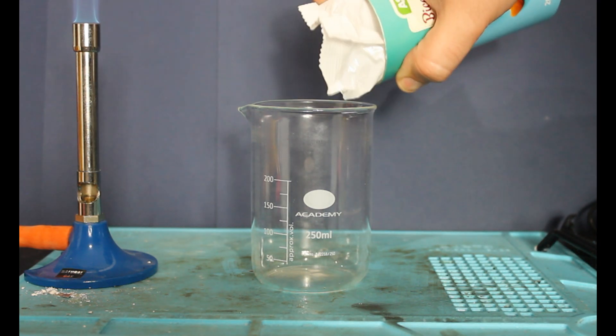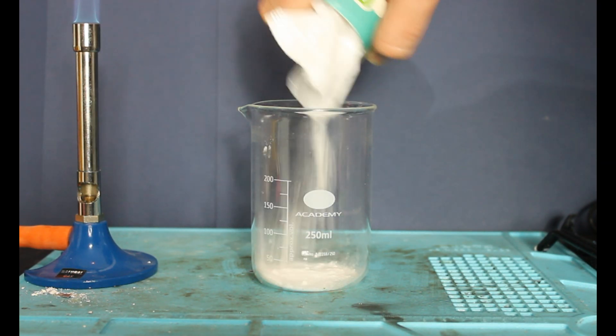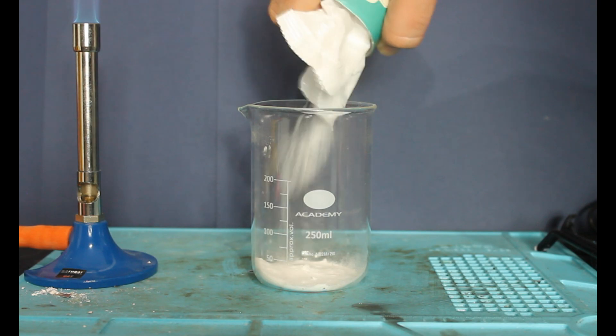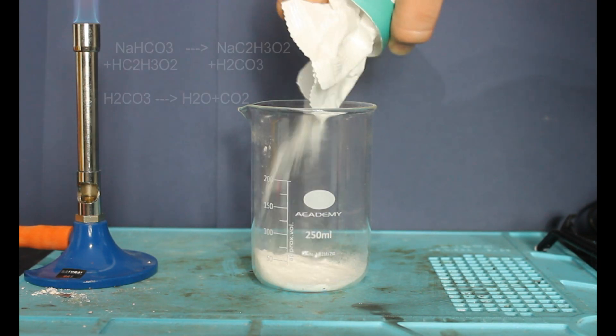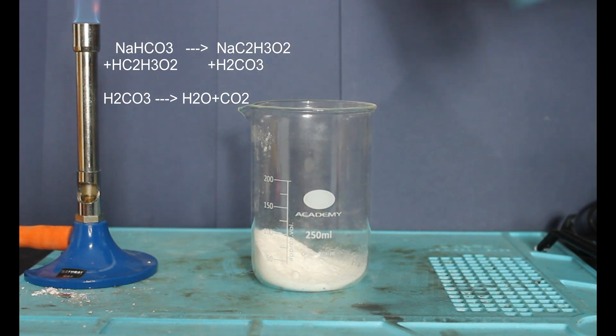Our first step is to produce carbon dioxide gas. For this, we'll be using a well-known reaction with sodium bicarbonate and a 5% acetic acid solution, better known as cooking vinegar.